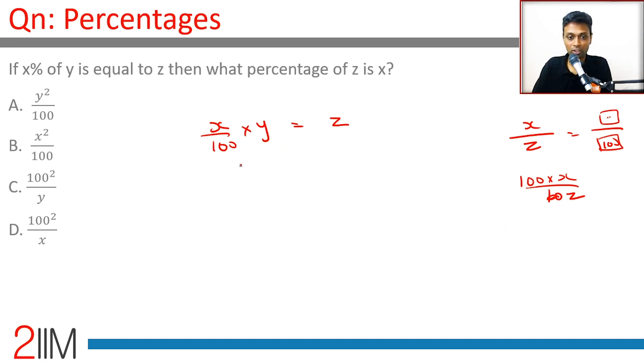And so x into y, x by 100 into y is z. We want to find 100x divided by z. We need to find x by z first. Simplify this.